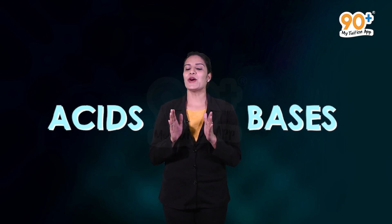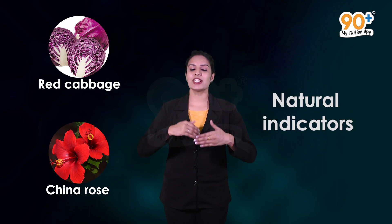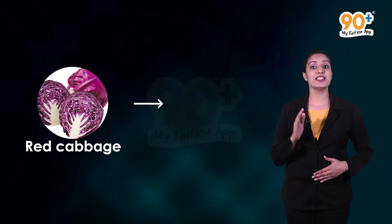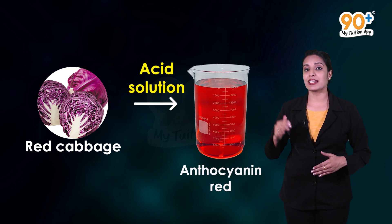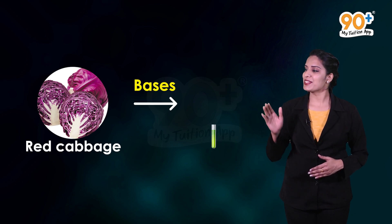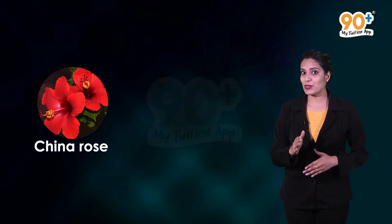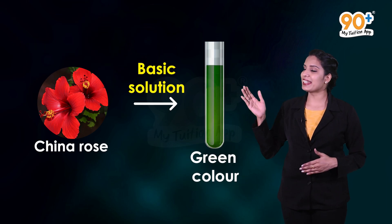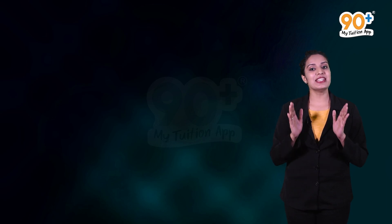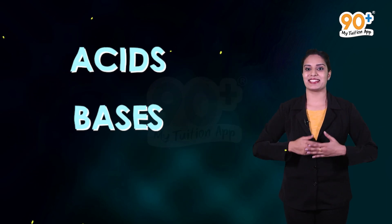Let me explain. Red cabbage and china rose are naturally occurring indicators and can be used to differentiate acids and bases. A red cabbage solution is normally purple in color, but with a very acidic solution it gives an anthocyanin red color, and with bases it gives a greenish yellow. Similarly, china rose converts acidic solutions to dark pink and basic solutions to green color.